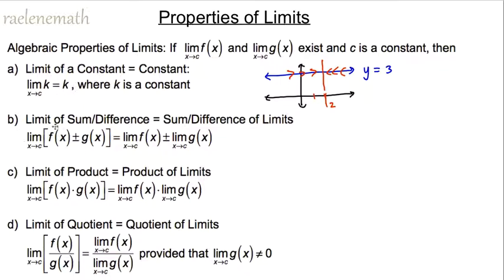The second property says that the limit of a sum or difference of two functions is equal to the sum or difference of the limits. Similarly, the third property says that the limit of a product equals the product of the two individual limits.